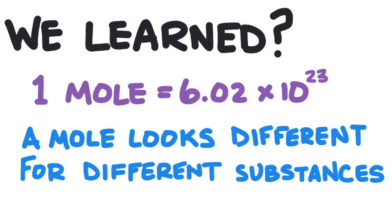So in this video, we learned that a mole is 6.02 times 10 to the 23 things. And a mole of different substances will look different because every molecule and atom is different from one another.